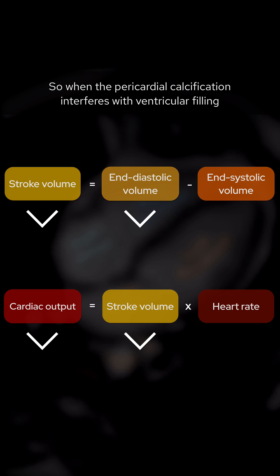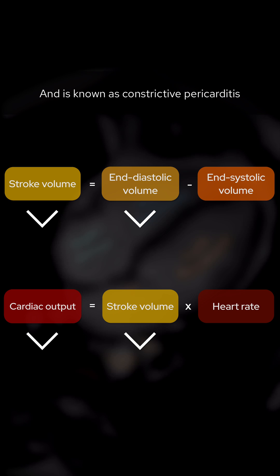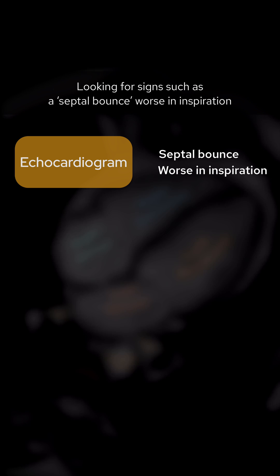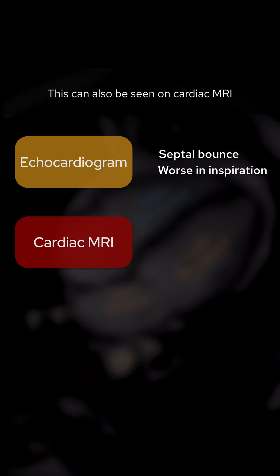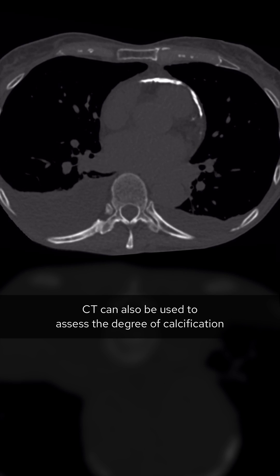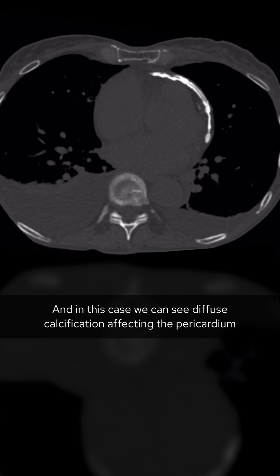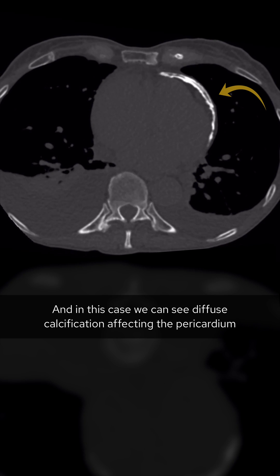So when pericardial calcification interferes with ventricular filling, this can present with signs of both right and left heart failure, and is known as constrictive pericarditis. Echocardiogram is the first-line imaging test, looking for signs such as a septal bounce, worse on inspiration. This can also be seen on cardiac MRI. CT can also be used to assess the degree of calcification, and in this case we can see diffuse calcification affecting the pericardium.